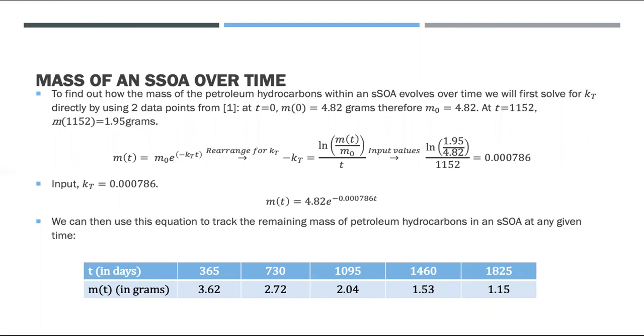Using these values, we'll input into the equation, but first we have to rearrange the original one to solve for negative K_T. We get the equation negative K_T is equal to natural log of the final mass divided by the initial mass all over time. When we put our values, we get out a decay rate of 0.000786. Now we just substitute in the numerical value of K_T, and we get the simplified decay rate equation.